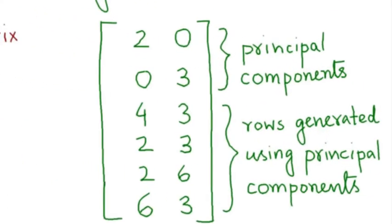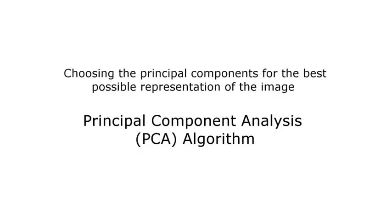Monica, in this case all the rows can be exactly represented by rows 1 and 2. But for an actual image, this may not be the case. We need to use approximations. How will you choose the principal components for the best possible representation of the image matrix? Then, let me summarize the PCA algorithm. Here we go.